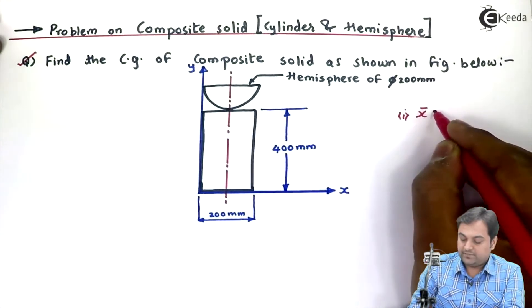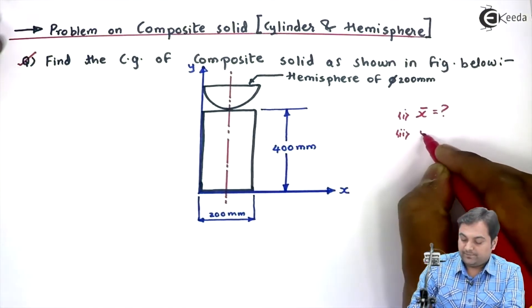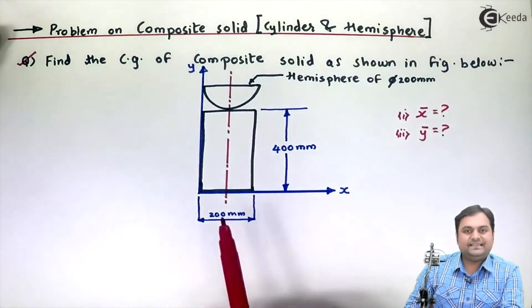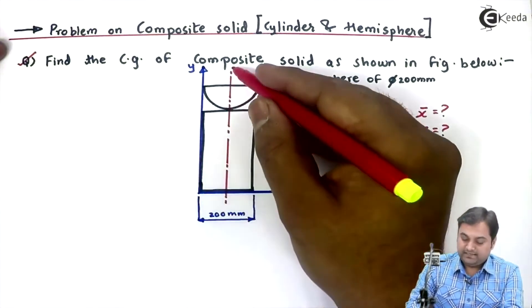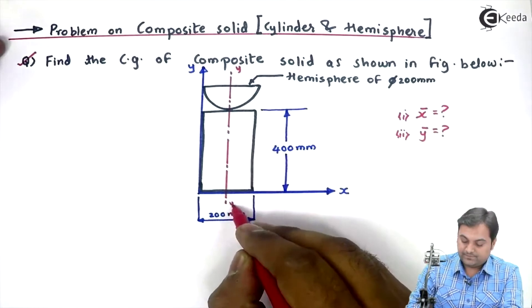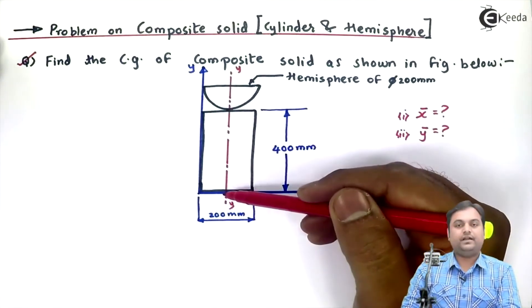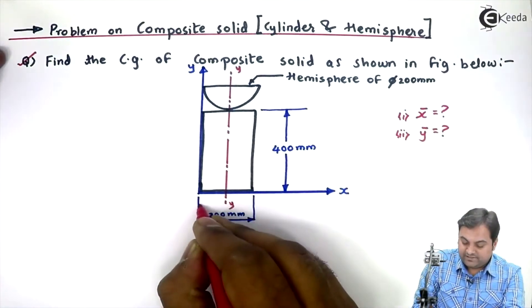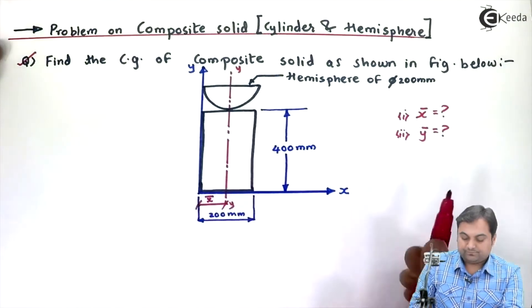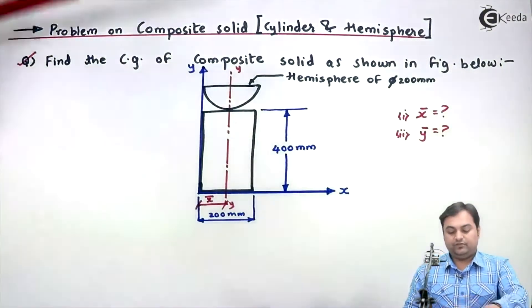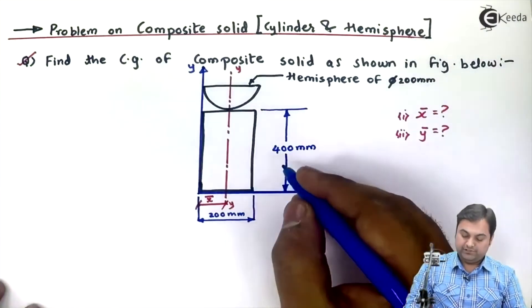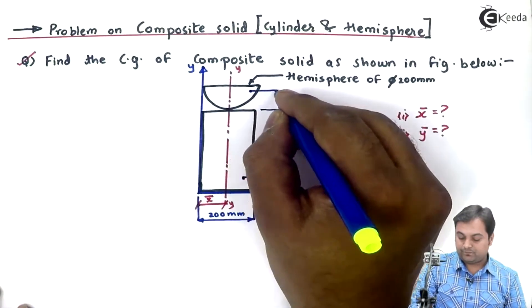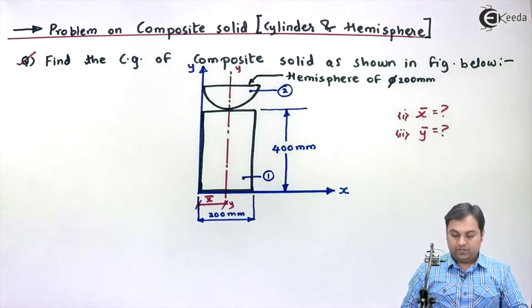Since CG is the question, we have to calculate X-bar and Y-bar. As we see in the diagram, this composite solid is symmetric about the vertical Y-axis. We will divide the figure into two solids: cylinder will be the first solid and hemisphere will be the second solid.